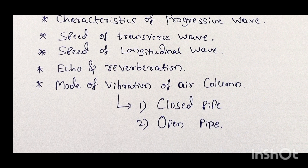Next is closed and open air columns. Questions like 'what is meant by closed pipe?' and 'what is meant by open pipe?' may come for one mark. After that, you are going to get a five-mark question from this concept — the question is like: derive the expression for frequencies of a closed pipe, and derive the frequencies or modes of vibration of an air column in an open pipe.